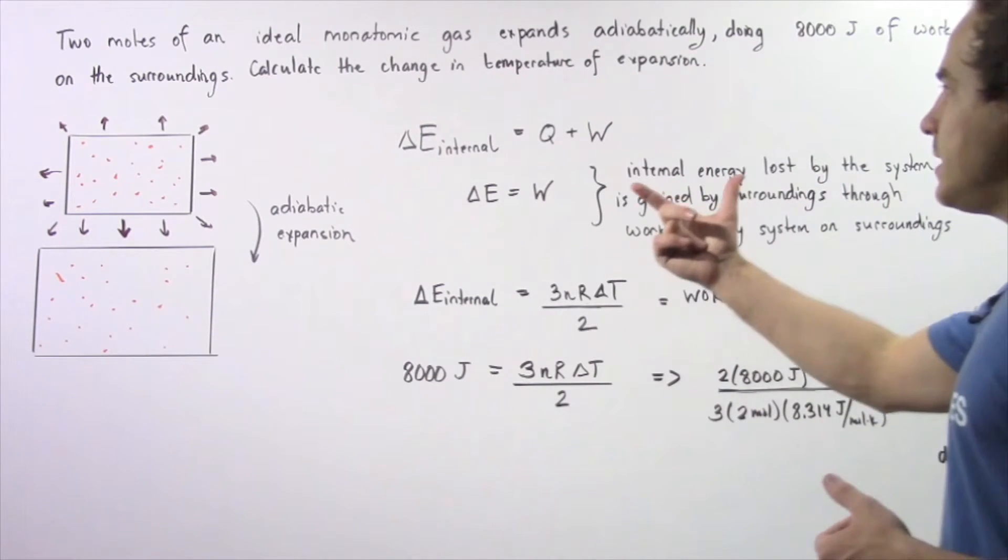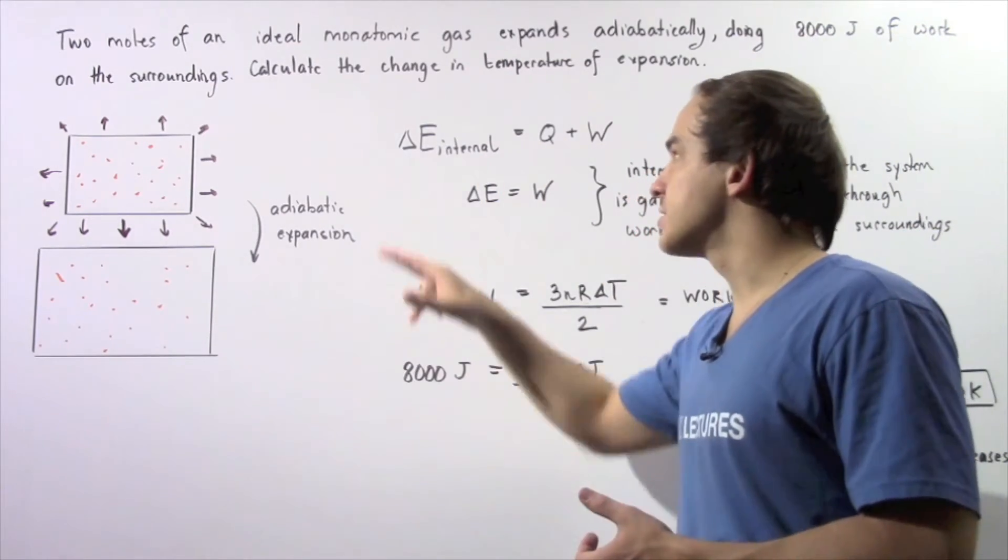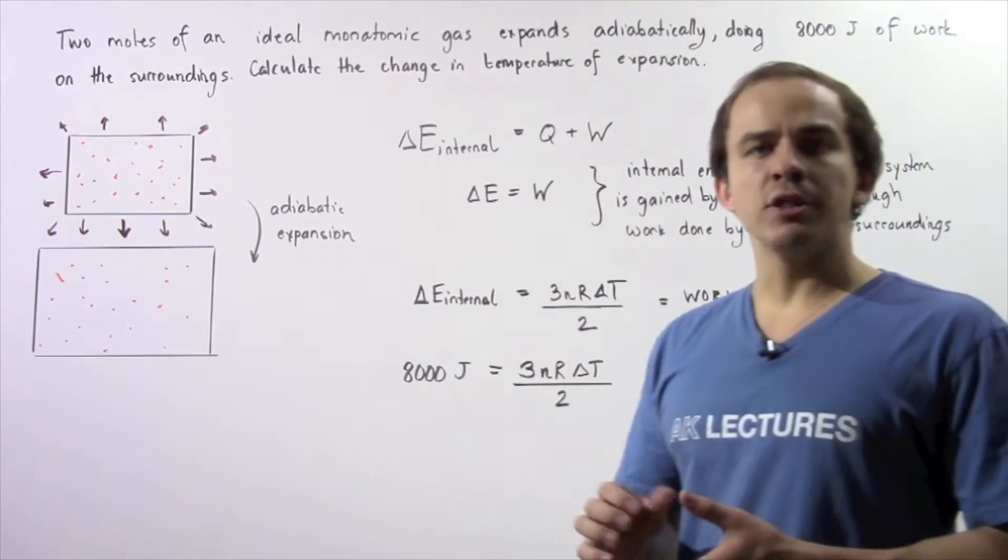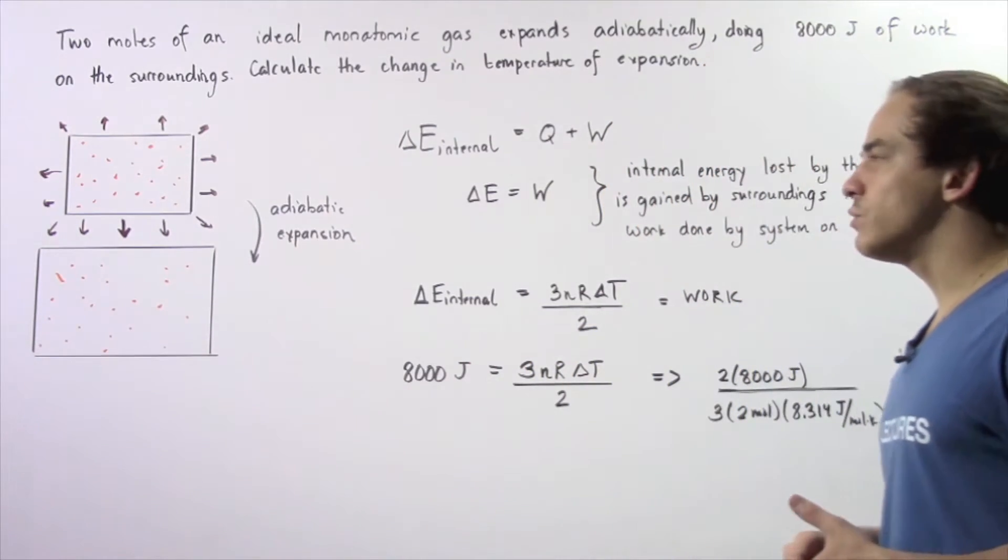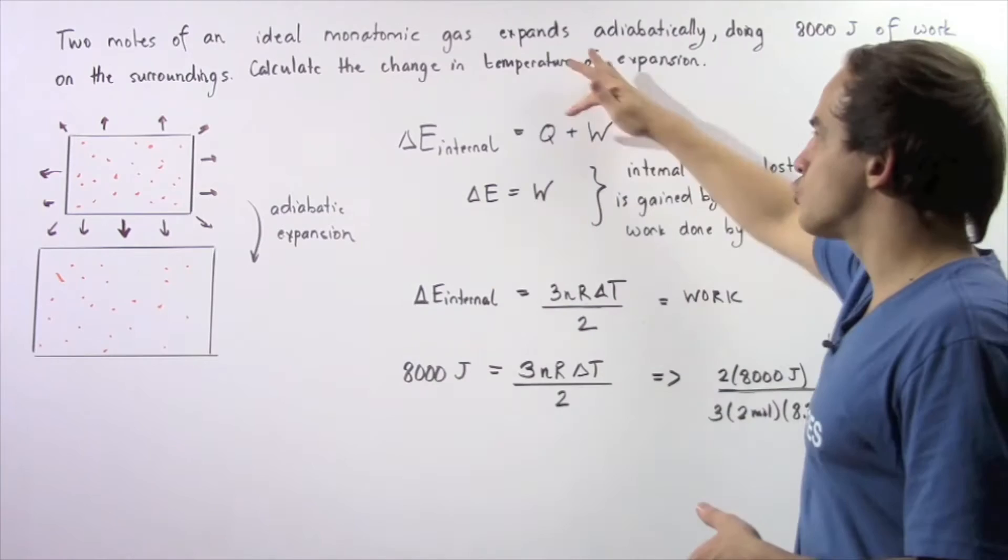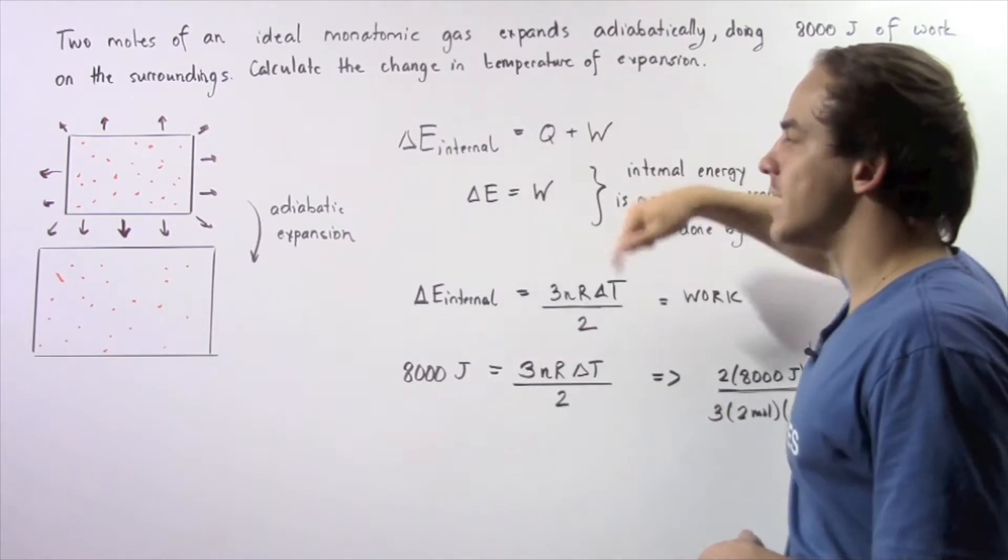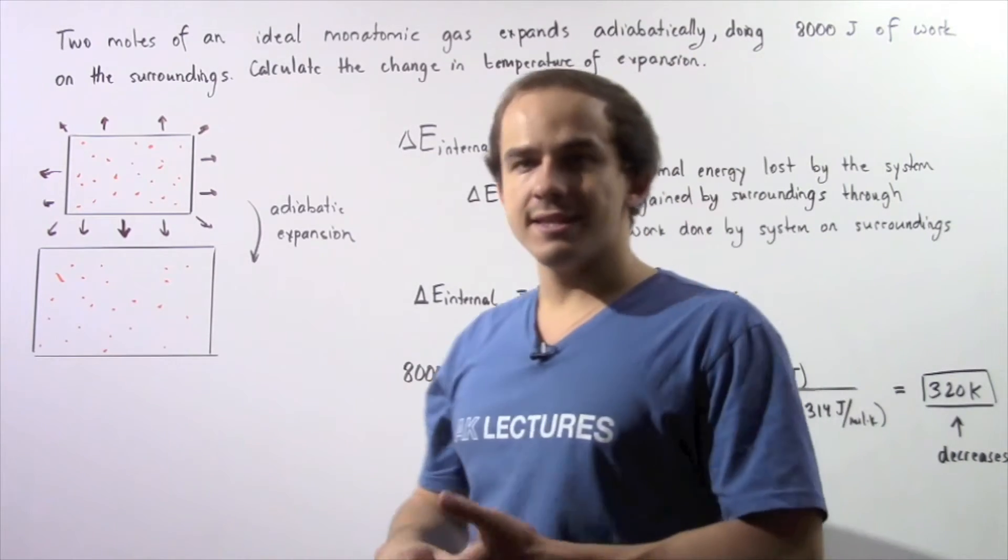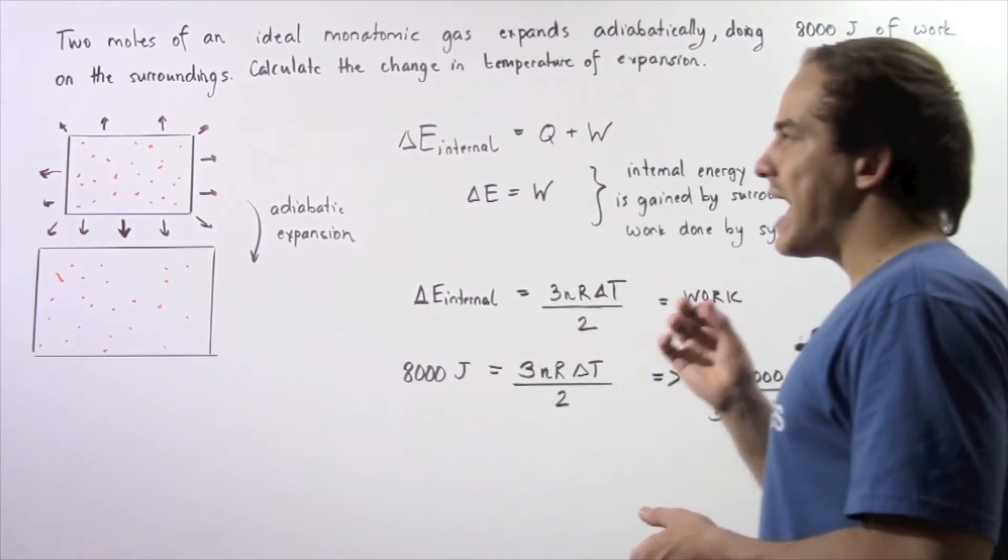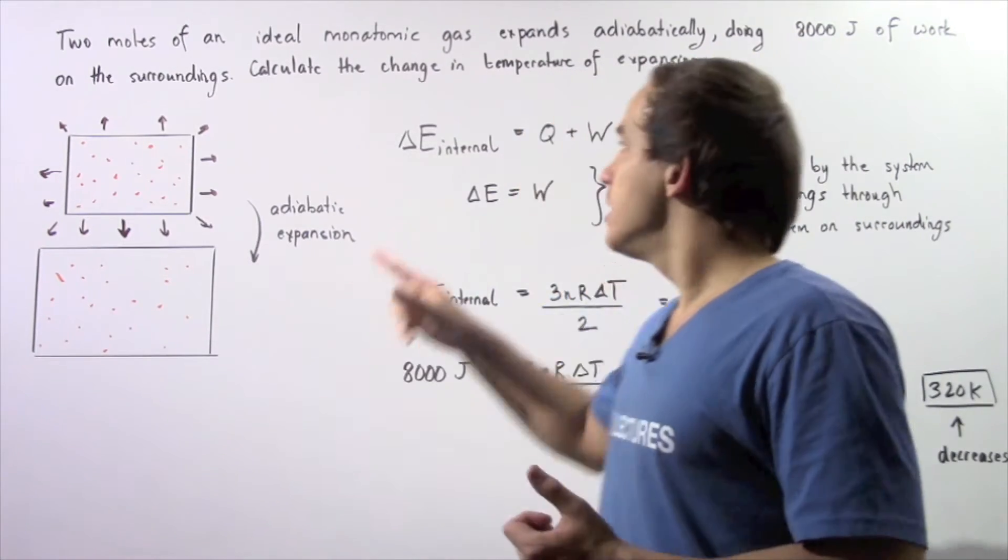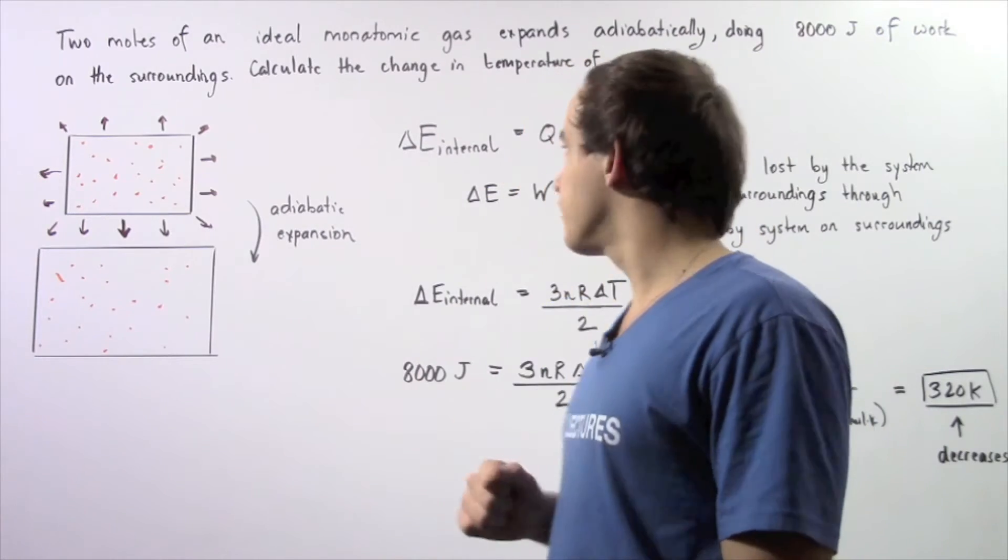Let's begin by recalling the first law of thermodynamics, which states that the change in internal energy of our ideal gaseous system equals the amount of energy transferred as heat plus the amount of work done on our gaseous system. Because we're dealing with an adiabatic expansion, Q is zero. There is no heat transfer.